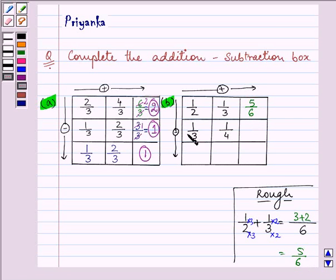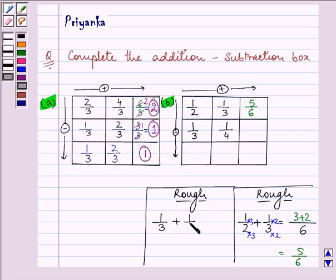Similarly, here also we will be adding up. Let's add 1/3 and 1/4. LCM is 12, we will be having 4 plus 3 in the numerator. So 7/12.